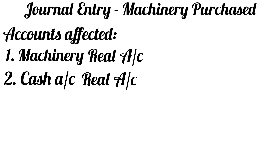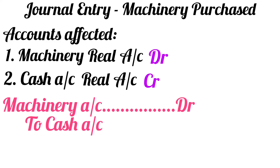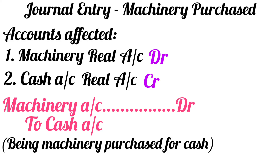When you buy machinery for cash, machinery comes into the business. Hence, machinery account will be debited. On the other hand, cash goes out. Hence, cash account will be credited. So the journal entry becomes: machinery account debit to cash account, and the narration will be: being machinery purchased for cash.